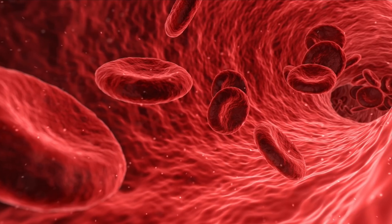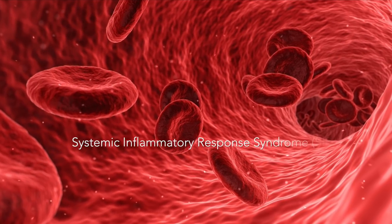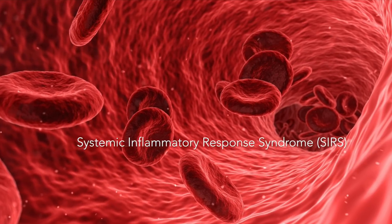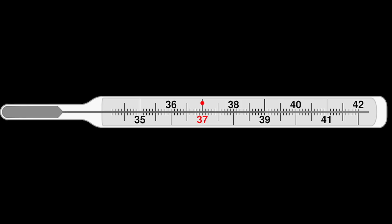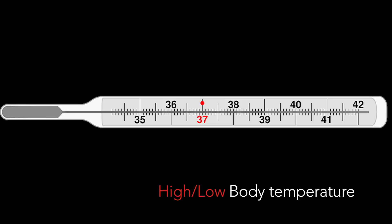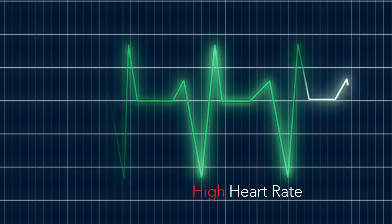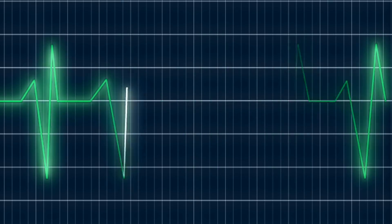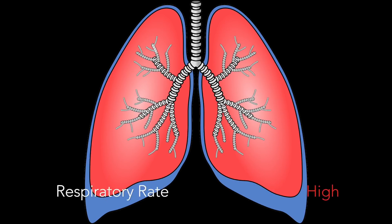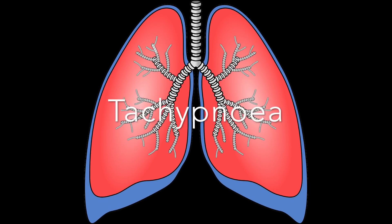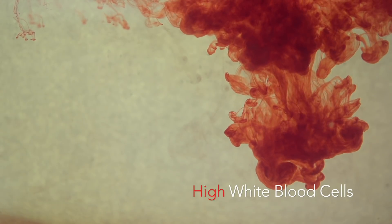Let's start by defining an inflammatory response. Medically, this is known as a systemic inflammatory response syndrome, or SIRS. It is defined specifically as the presence of two of the following: high or low body temperature, either above 38 or below 36 degrees Celsius; a high heart rate over 90 beats per minute, known as tachycardia; a high respiratory rate in which you breathe over 20 times per minute, known as tachypnea; or elevated white blood cells on your blood test, which indicates an infection.